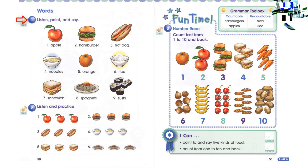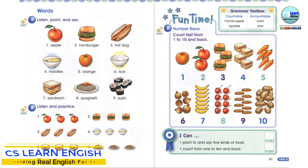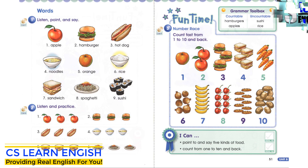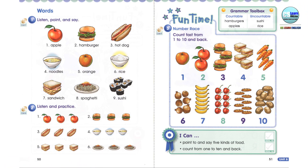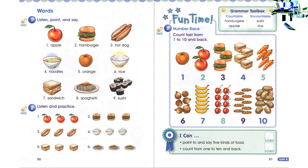Words, Exercise 1: Listen, point, and say. One: apple. Two: hamburger. Three: hot dog. Four: noodles. Five: orange. Six: rice.